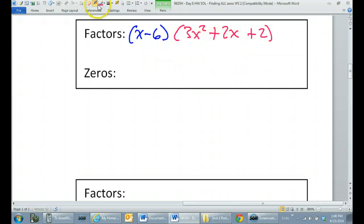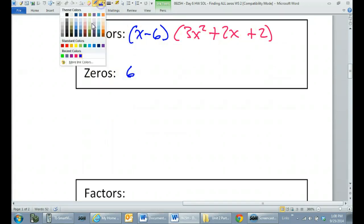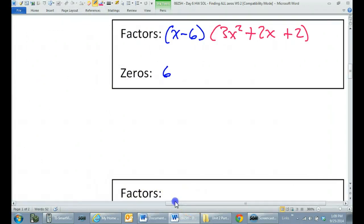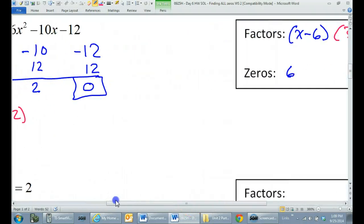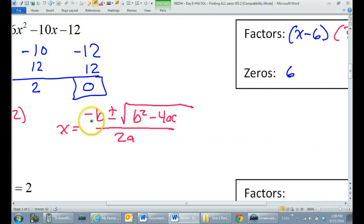But, if I want the other zeros other than 6, I'm going to have to set this equal to 0 and solve. Remember, the quadratic formula says, X equals opposite of B plus or minus the square root of B squared minus 4AC all over 2A. And, the song goes, opposite of B, opposite of B, plus or minus square root, plus or minus square root, B squared minus 4AC, B squared minus 4AC, all over 2A, all over 2A. Stop laughing. It will help you remember.